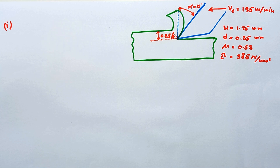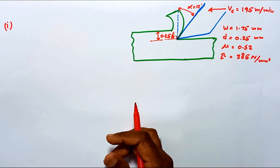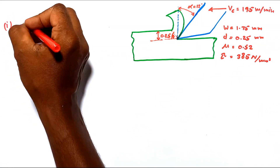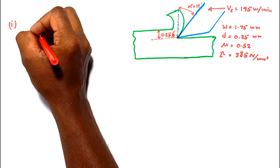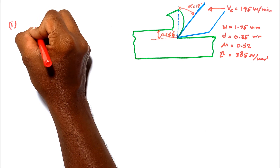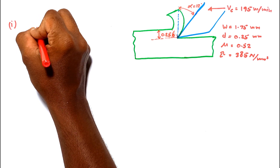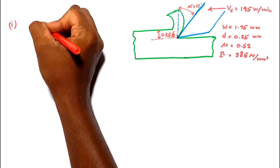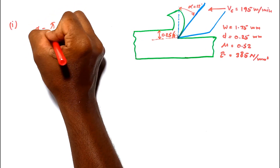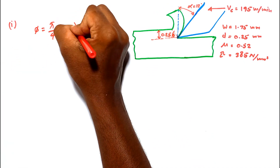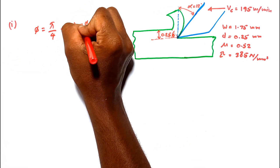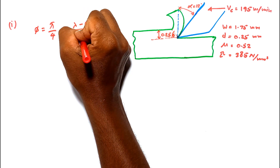According to the Ernest-Merchant theory, shearing will take place in the direction where the energy required for shearing is minimum. By minimizing the power, we can obtain the equation for the shear plane angle. Phi is equal to pi divided by 4, minus lambda minus alpha, the friction angle minus the rake angle, divided by 2.